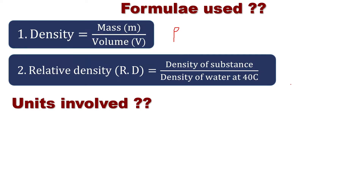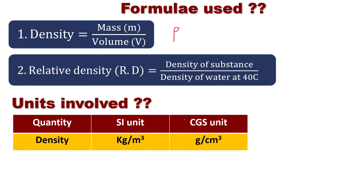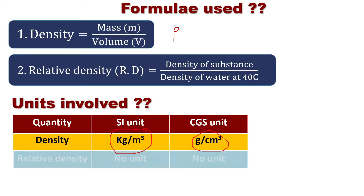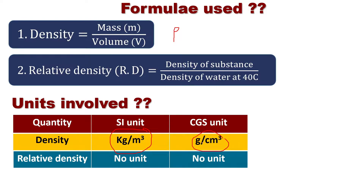The density unit in the SI system is kg per meter cube. In the CGS system, the density unit is gram per centimeter cube. Relative density is the ratio of two similar quantities — that is, density — so it does not have a unit.